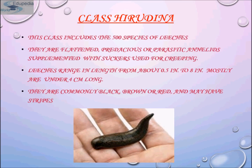Class Hirudinea includes 500 species of leeches, also known as blood suckers. They are flattened, predaceous or parasitic annelids equipped with suckers used for creeping and gripping the host. They are commonly black, brown, or red and may have stripes or spots. The majority of leeches are predators on small invertebrates; most swallow their prey whole, but some suck only the soft parts from their victims.